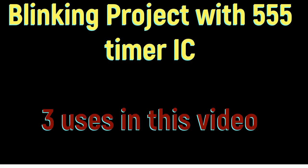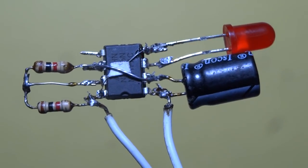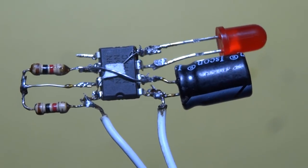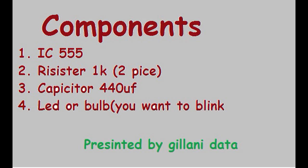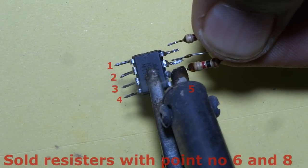Bismillahirrahmanirrahim, in this video we will make a simple flip-flop circuit with timer IC 555. Components required in step one, we will solder resistor with IC.